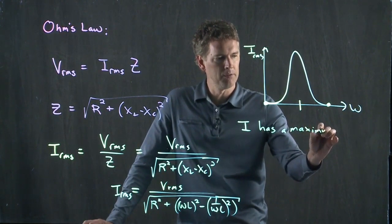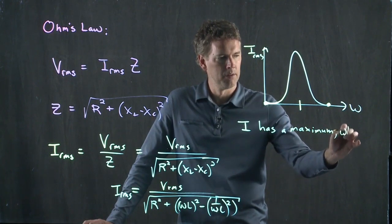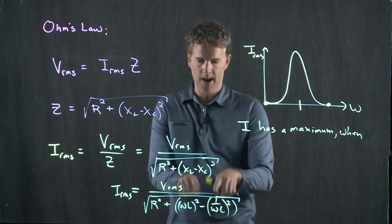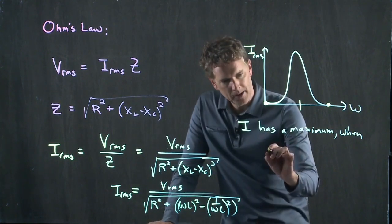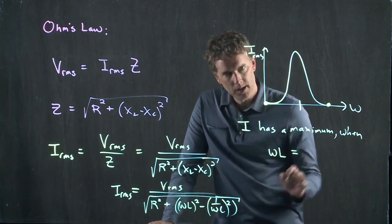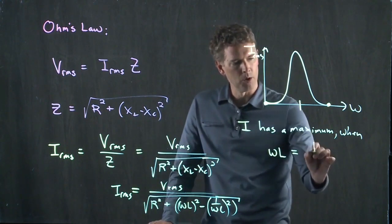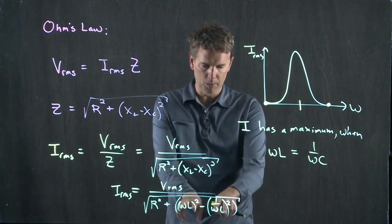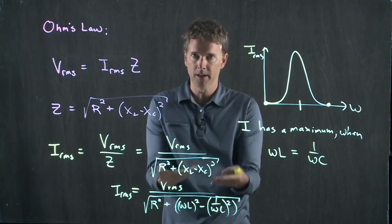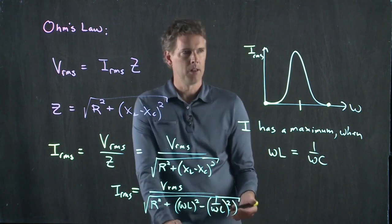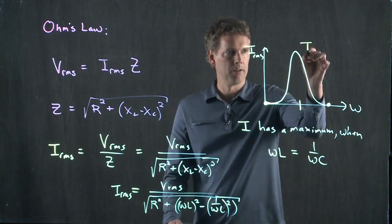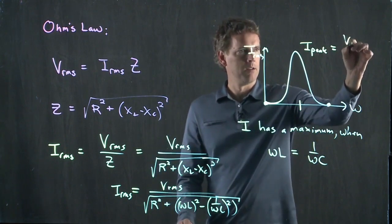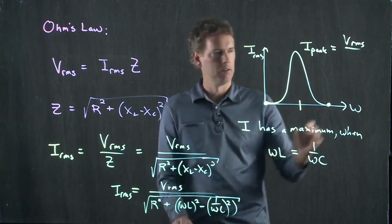And that maximum occurs when these two things exactly cancel out. It has a maximum when omega L is equal to one over omega C. If omega L is equal to one over omega C, these cancel out. The denominator is as small as it can be. The peak current there is therefore just going to be VRMS divided by R.